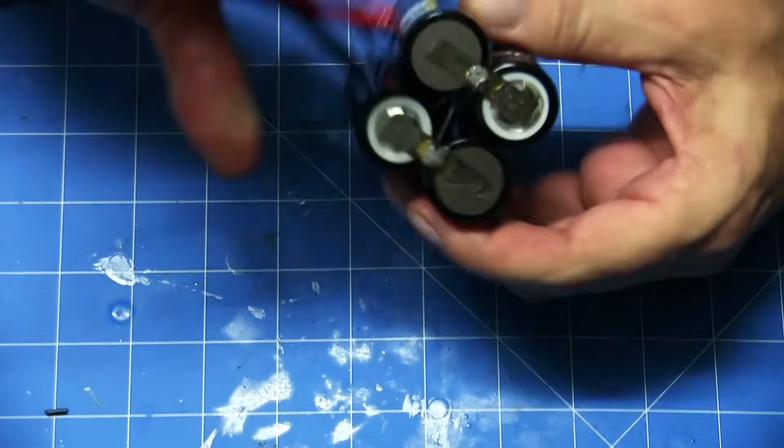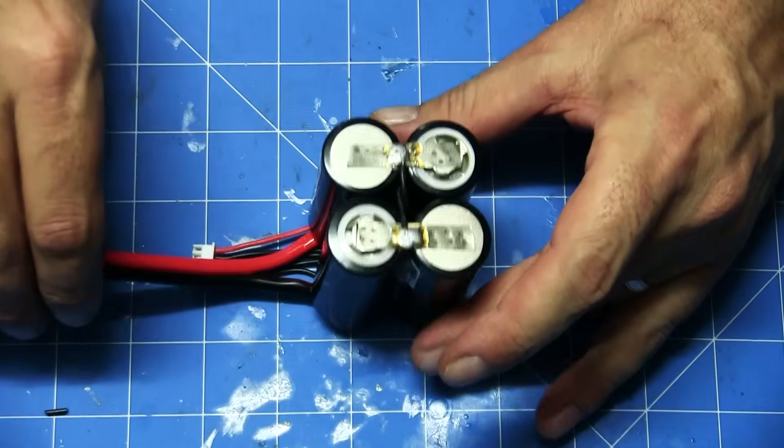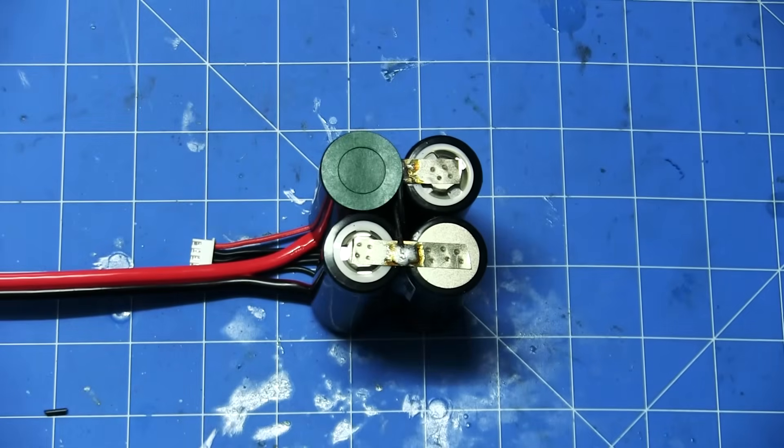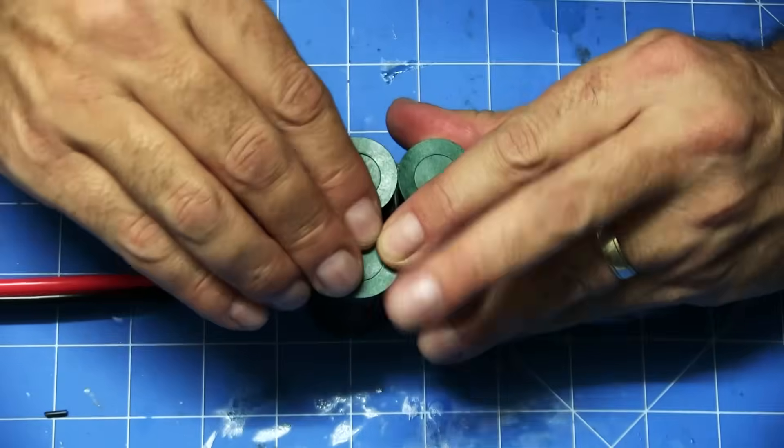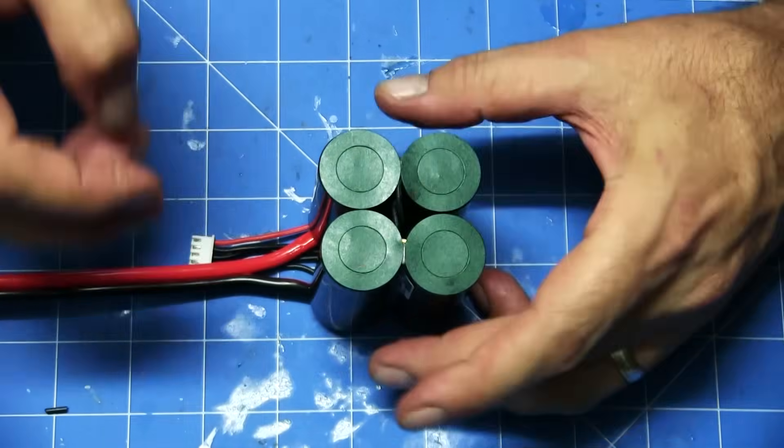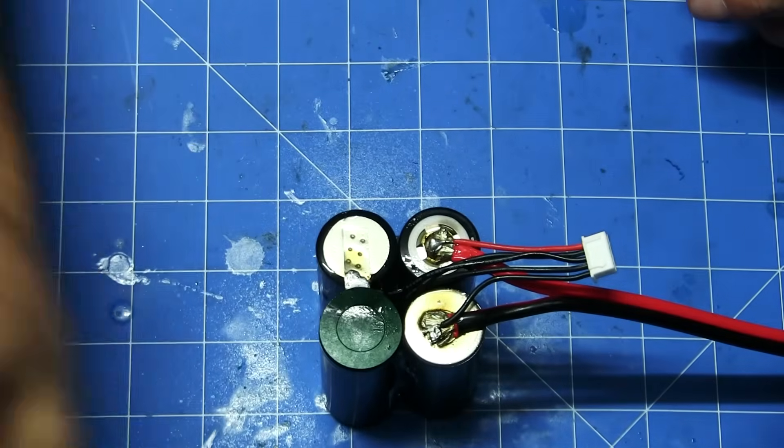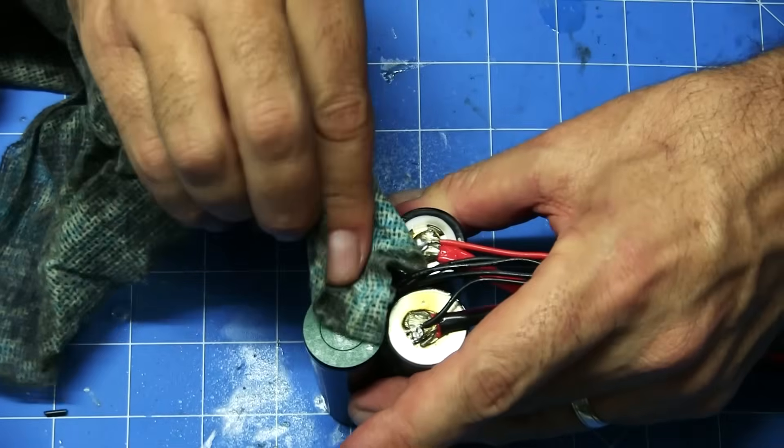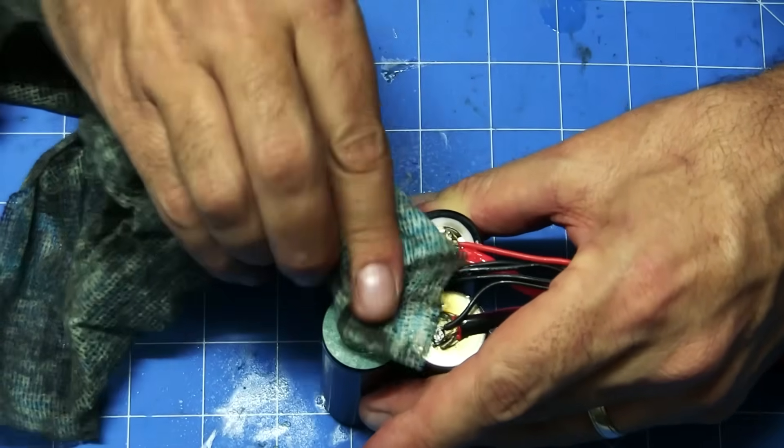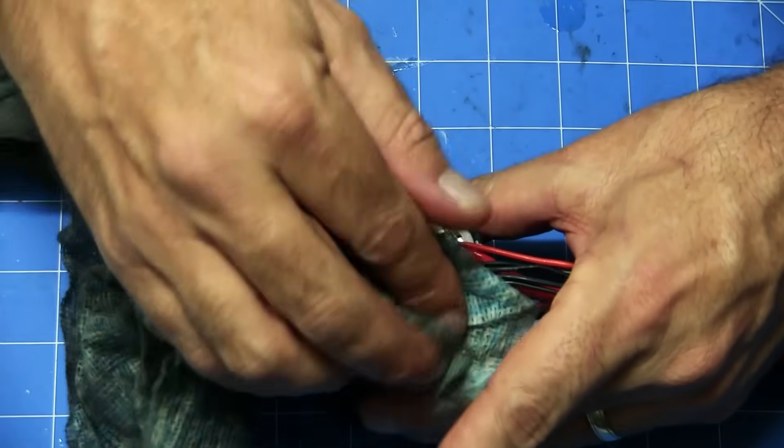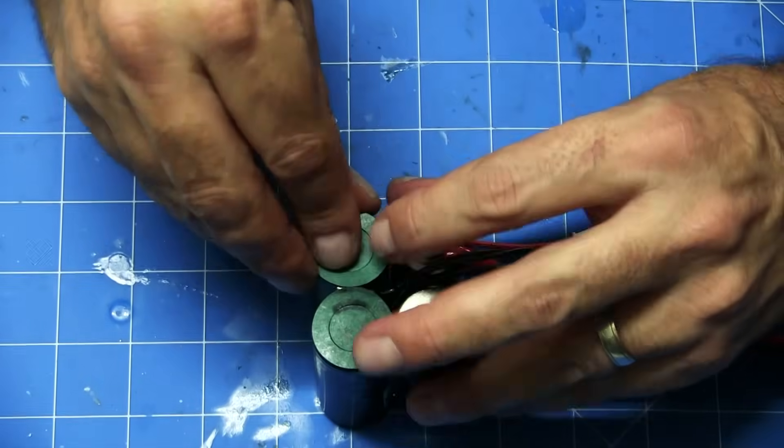After checking everything, our battery should be good. I'm going to put a couple of stickers on the bottom here just to stop any shorting going on. We'll now clean off the excess flux with the rubbing alcohol and put the remaining stickers on each cell.